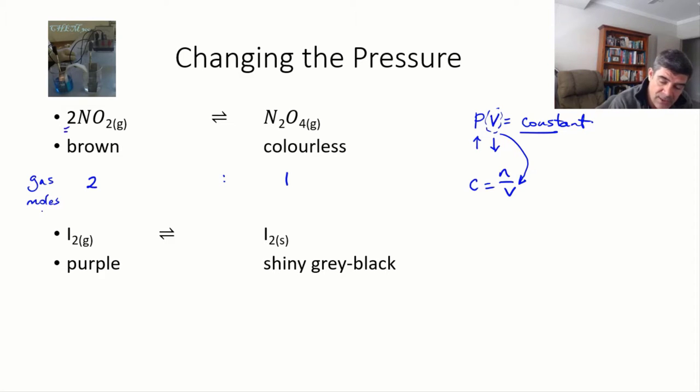We're looking at the coefficient in front of each of these substances. So it's a two in front of the nitrogen dioxide, and the assumption is that's one in front of the dinitrogen tetroxide.